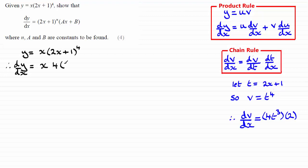So, that's going to be essentially 2x plus 1 raised to the power 3, okay? That's the 4t cubed here.